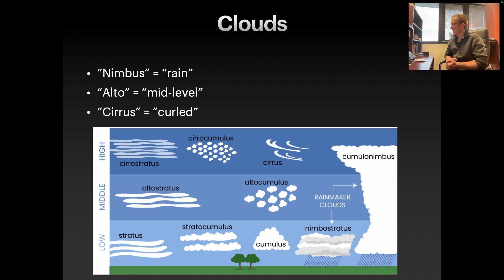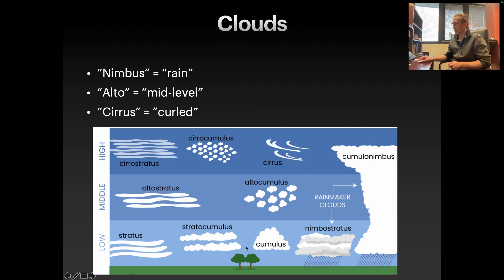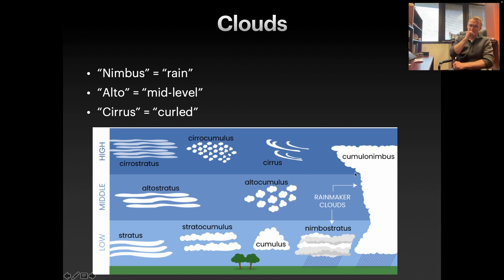Then we've got our cumulonimbus clouds. These are thunderstorm clouds, and they actually reach through all the different layers. Cumulonimbus clouds tend to start as cumulus clouds and develop vertically until they've reached up into the atmosphere. We'll talk a lot more about that in another video.